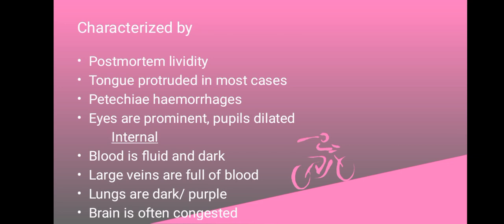When the body is deprived of oxygen and death results, the blood in the vessels is going to settle in relation to gravity. For example, if the body is lying on its right side, the blood in the vessels is going to settle on the right side, and this is shown by a darkening of the skin on that side — a dark color that appears more purple.